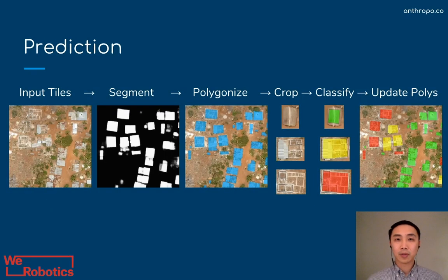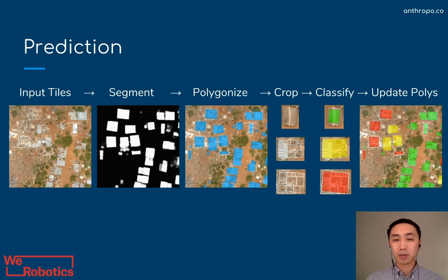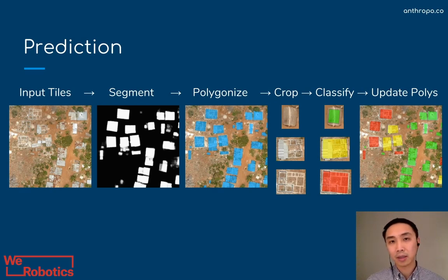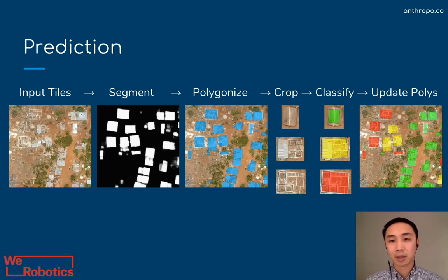Putting it together for prediction, we take our input tile images, put them through our segmentation model, polygonize the outputs into georeferenced polygons of each building, then take those building polygons and crop them into new images of every building, which we run through our classifier. This gives predictions of whether each one is a complete building, incomplete building, or a foundation. Finally, we take all these predictions and update the polygons to create the final color-coded map you see on the right.